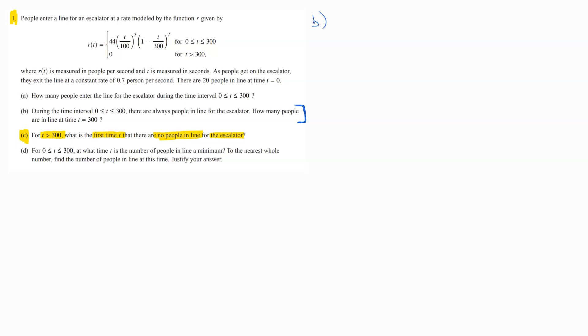So, in Part B, we discovered how many people were in line at time T equals 300. So, at time T equals 300, we know that we had 80 people in line at T equals 300.